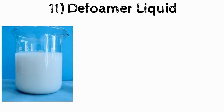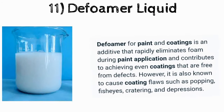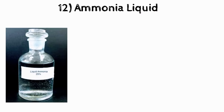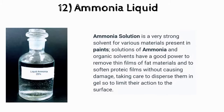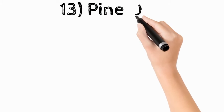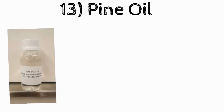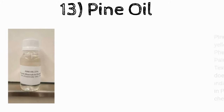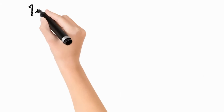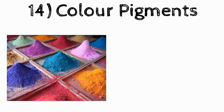The eleventh raw material you need for making glossy distemper is liquid silicone defoamer. The twelfth is ammonia liquid. The thirteenth is pine oil auxiliary.